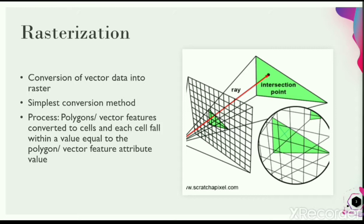Rasterization is the simplest process among the two conversion methods. Now, what happens during the rasterization process? In the rasterization process, the polygons or vector features are converted to cells, and each cell will fall within a value which will be equal to the attribute value of that polygon or vector feature.